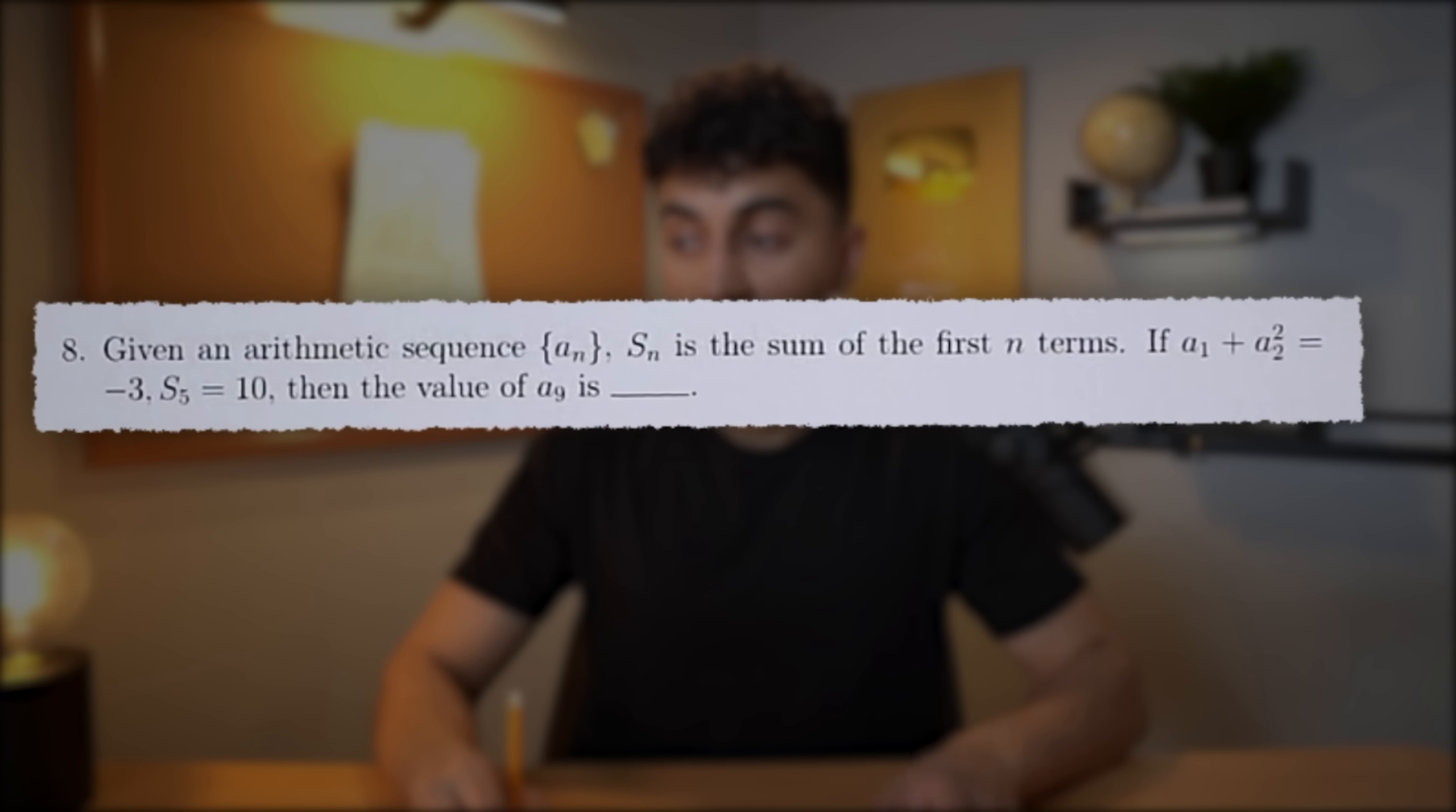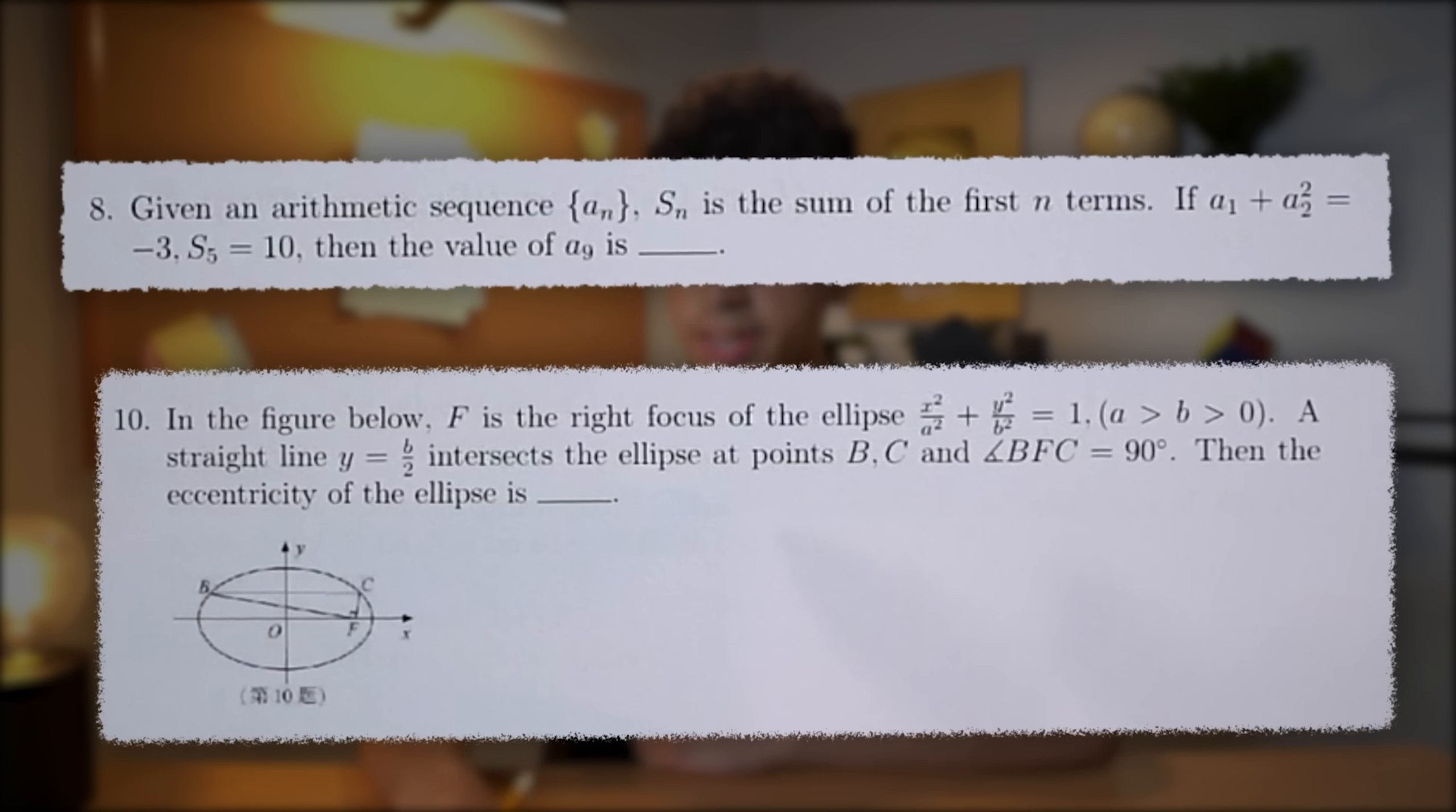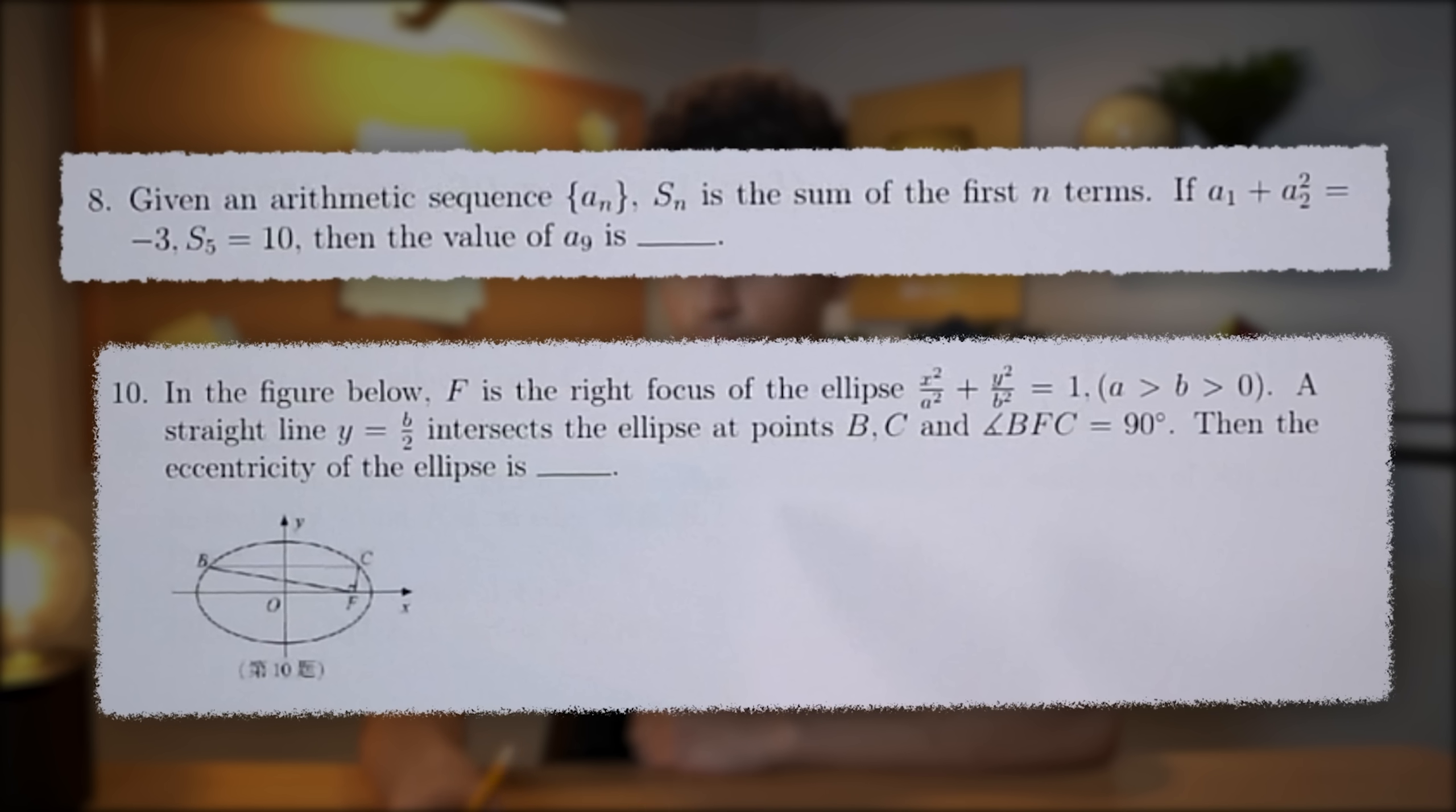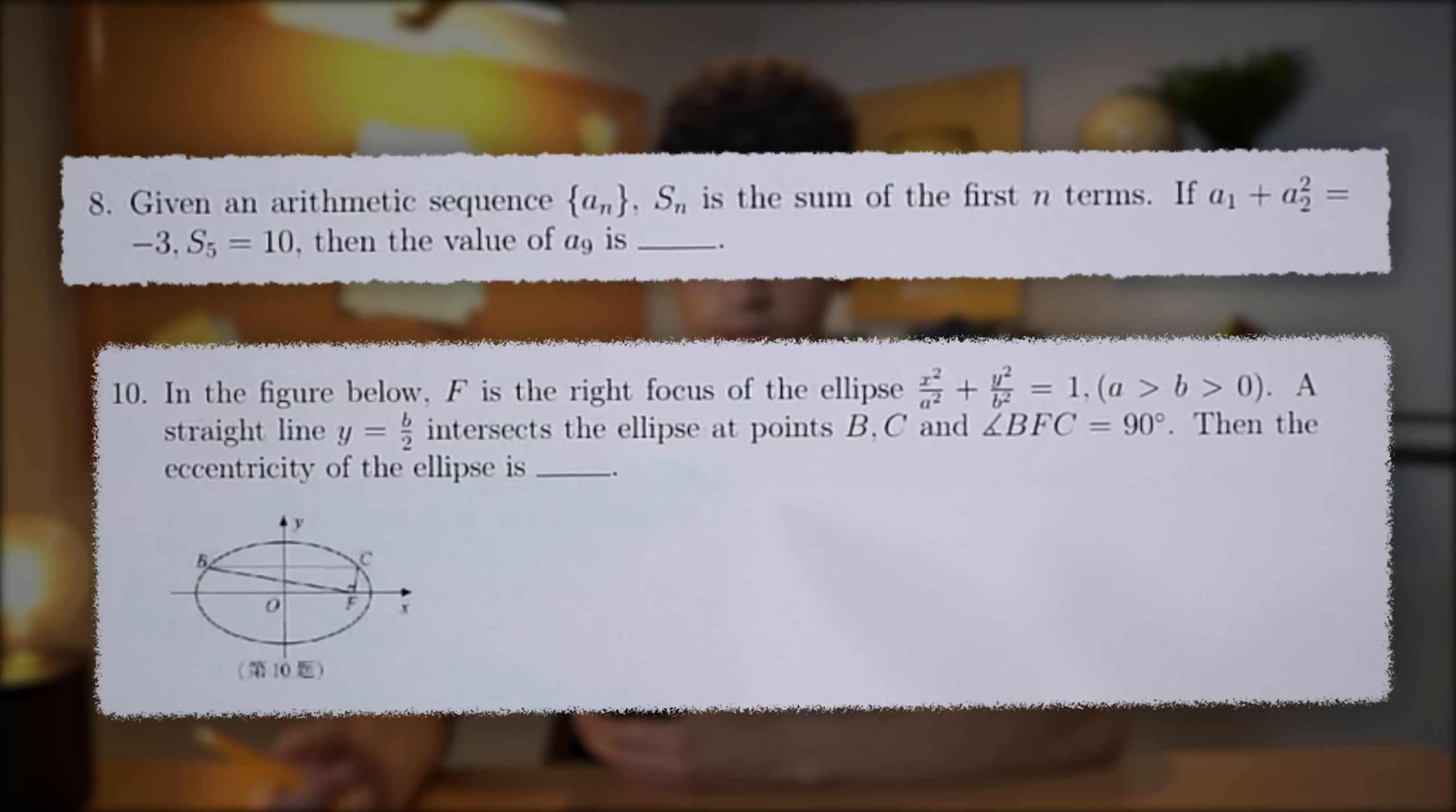Given an arithmetic sequence, Sn is the sum of the first n terms. If A1 plus A2 squared equals negative 3, S5 equals 10, then the value of A9 is what? Another question is, in the figure below, F is the right focus of the ellipse, X squared over A squared plus Y squared over B squared equals 1, where A is greater than B, which is greater than 0. A straight line, Y equals B over 2, intersects the ellipse at points BC, and angle BFC equals 90 degrees. Then the eccentricity of the ellipse is what?